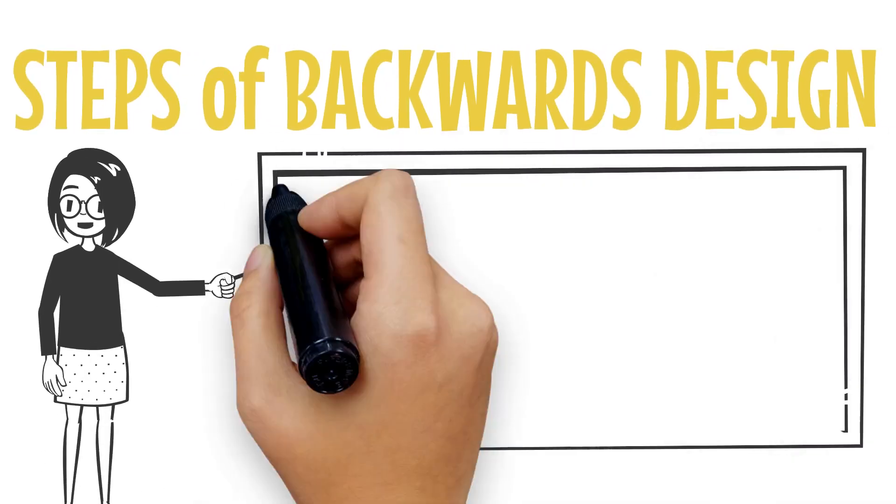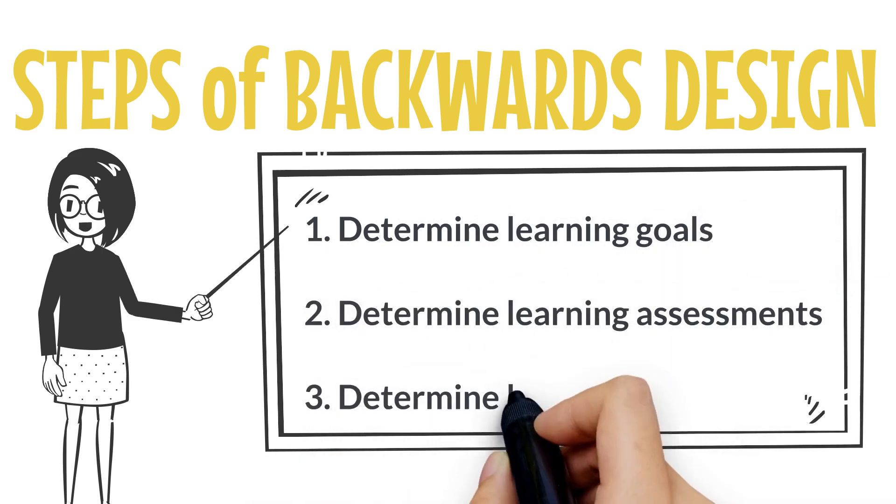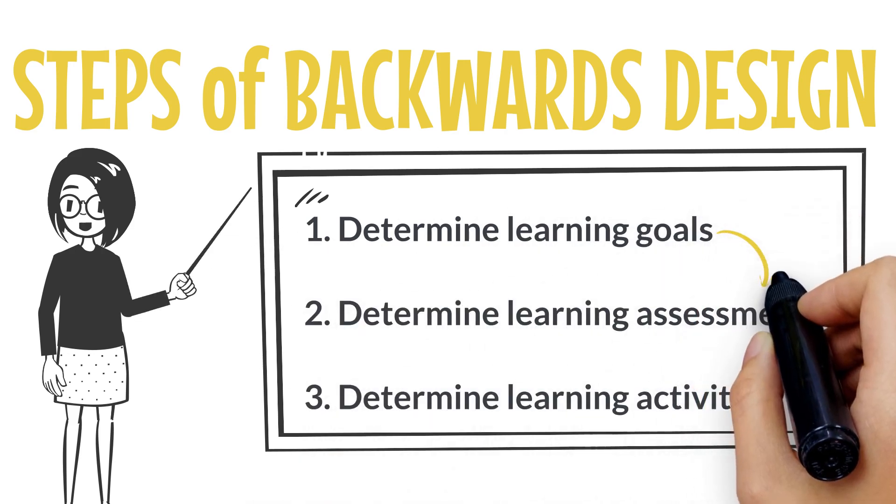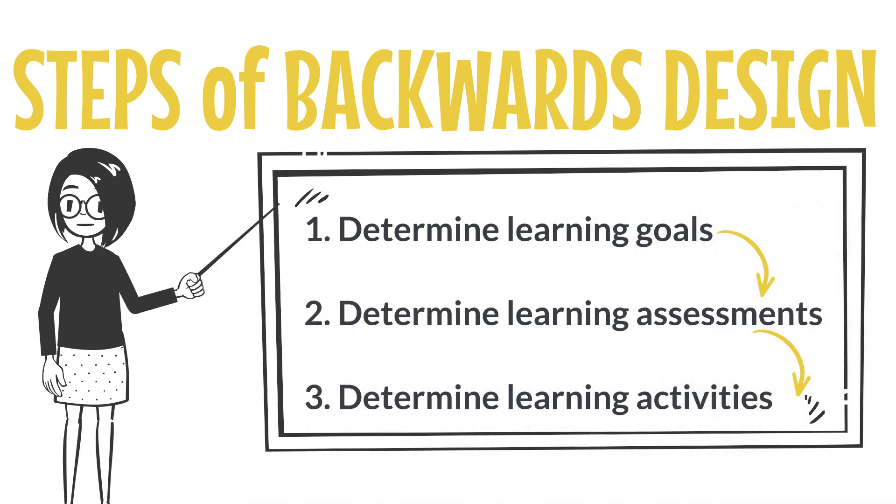So to recap, the three steps of backwards design are determine learning goals, determine learning assessments, and determine learning activities. Importantly, ensuring alignment along the way.